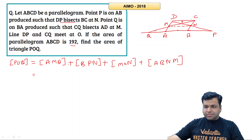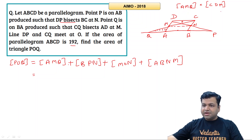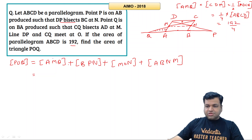Area of triangle AMQ equals area of triangle CDM, because the two triangles are congruent — DM = MA and the lines are parallel, so by ASA congruence they match. Area of CDM is half of parallelogram MDCN, which is itself half of the whole parallelogram. So area of triangle AMQ = 192/4. By the same logic, area of triangle BPN = 192/4.